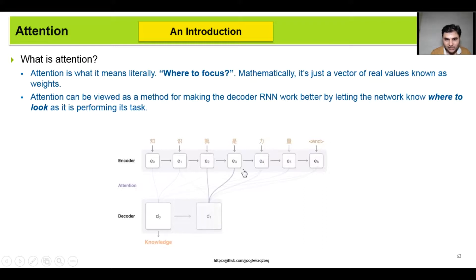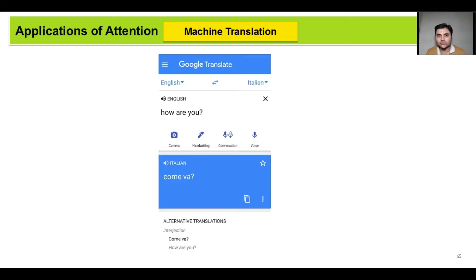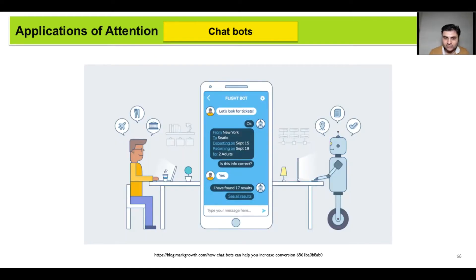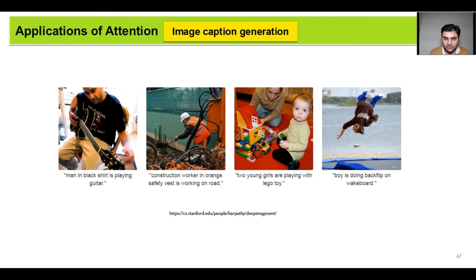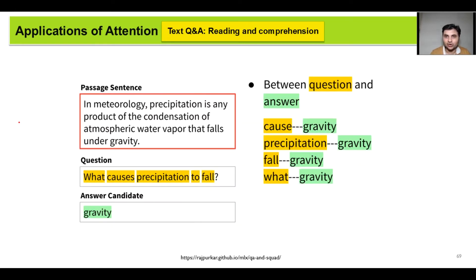Now let's see the applications of attention, where it is being used currently. Attention is being used in machine translation, it is being used in chatbots, and it is being used in image caption generation. In fact, attention has shown tremendous success in this task, and also in visual question answering. So we have an image, we have a question, we need to answer this question based on the image. And the next application is reading and comprehension.